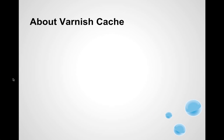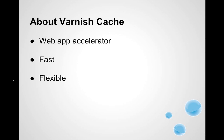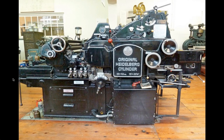A quick introduction to Varnish Cache: it's a web app accelerator or HTTP reverse proxy, known to be very fast and very flexible. We sort of likened it to a rotational press that revolutionized printing — instead of one print every 10 seconds, you could turn out 10, 20, or 30 copies per second. Similarly, Varnish Cache acts as a distribution point where your application servers create content and Varnish stores and services it up really quickly.